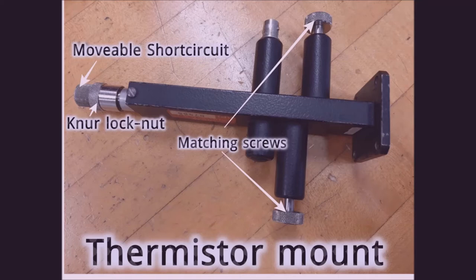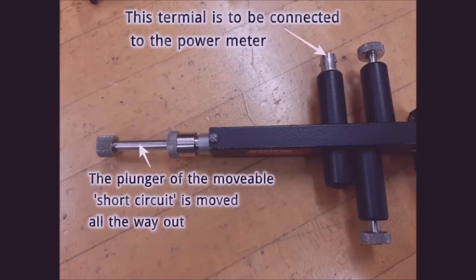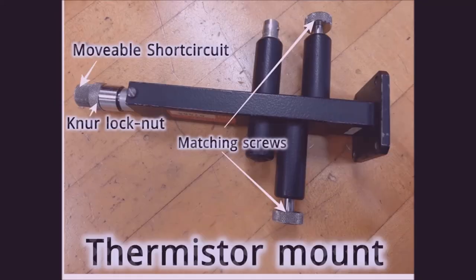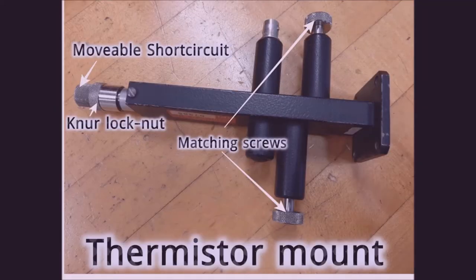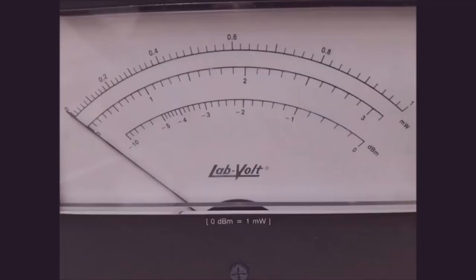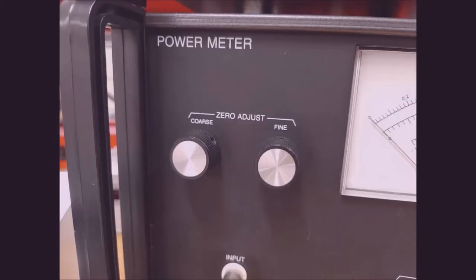The actual look of the thermistor mount is shown in this photo — the matching screws and the movable short circuit are labeled. The short circuit can be moved inward and outward; a knob lock holds it in position. The thermistor is connected to the input port of the power meter. Power readings can be obtained from the dial; we can read power in both milliwatts and dBm. The range selection buttons select the proper range — the highest range is 10 milliwatts. The zero-adjust knobs are used to zero the meter.